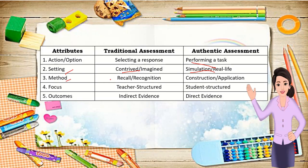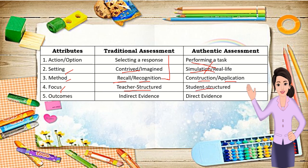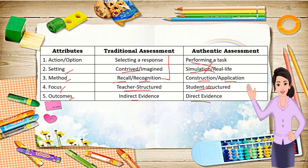In method, traditional assessment involves recall and recognition, while authentic assessment involves constructing and applying. In focus, traditional assessment is teacher-structured, while authentic assessment is student-structured. In outcomes, traditional assessment yields indirect evidence, while authentic assessment yields direct evidence.